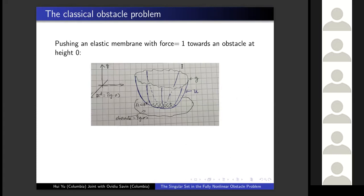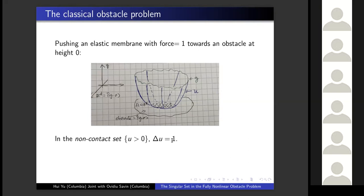Inside the domain, we start pushing down the membrane towards the obstacle using constant force equals one. Since you are pushing down, the membrane will bend down. But in the region where the membrane is still strictly above the obstacle — that is, where your function is still strictly positive — the shape of the membrane is determined by the balance between the force and elasticity. So in this non-contact set, Laplace of U equals one.